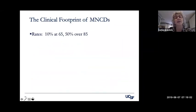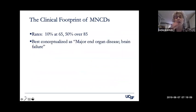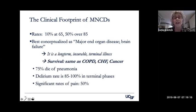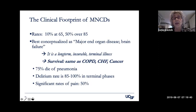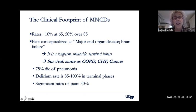The clinical footprint: rates are 10 percent at age 65 and 50 percent over 85, so it increases rapidly. It's best conceptualized as major end organ disease or brain failure — a long-term incurable terminal illness. Survival is really no different than other major systemic problems such as COPD, congestive heart failure, or cancer. Seventy-five percent of people with major cognitive disorders die of pneumonia, the delirium rate is 85 to 100 percent in terminal phases, and there are significant rates of pain up to 50 percent.